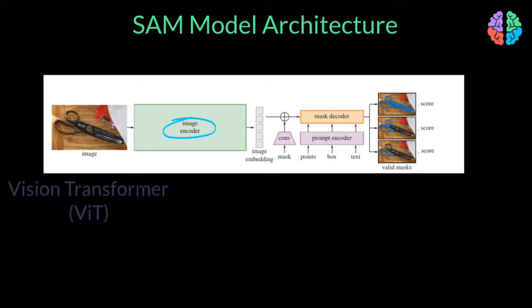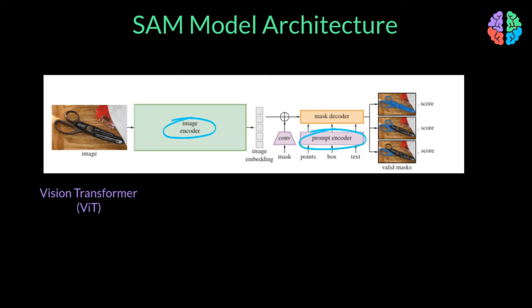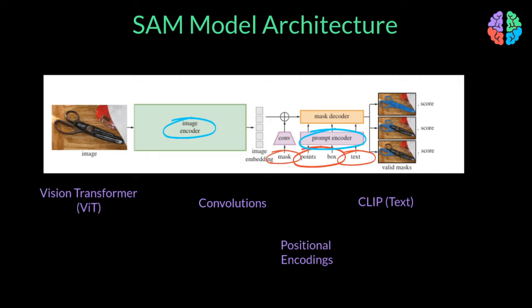The choice of encoder by the authors is the masked auto-encoder pre-trained vision transformer that can handle higher resolution inputs. In order to encode the prompts, they use prompt encoders. If the input is dense, such as a rough mask of the object, they use convolutional operations. And if the input prompt is sparse, such as points or bounding boxes, they use positional encodings. And lastly, if the input is a text prompt, they use CLIP embeddings.